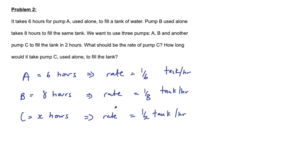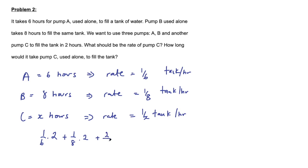Now we set up the equation. Using all three pumps for two hours, the total must fill one tank. Pump A's contribution is one-sixth times two; pump B's is one-eighth times two; pump C's is one-over-X times two. Adding them together: two-sixths plus two-eighths plus two-over-X equals one. Simplifying: one-third plus one-quarter plus two-over-X equals one.